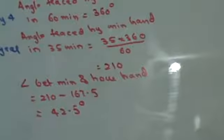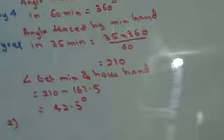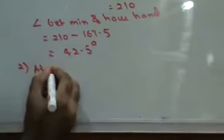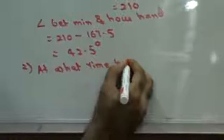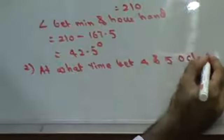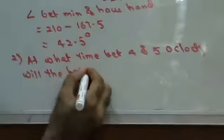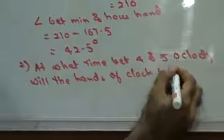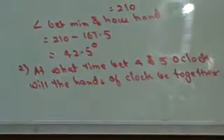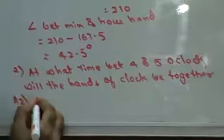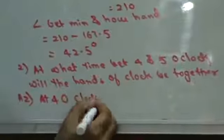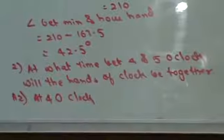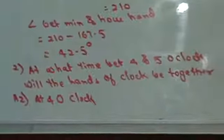That will be the angle between the minute hand and the hour hand when the clock shows 5:35. Next, at what time between 4 and 5 o'clock will the hands of the clock be together? At 4 o'clock, the hour hand is at 4 and the minute hand is at 12.